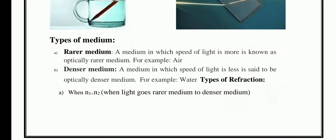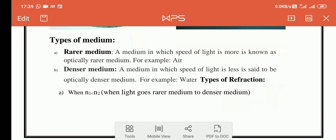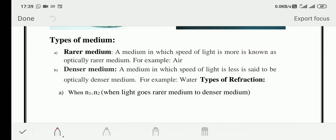Now the next topic is types of medium. The first is rarer medium and the second is denser medium. A medium in which the speed of light is more is known as an optically rarer medium. Consider a situation where you are on a clean, clear road with no traffic — your velocity will be more.